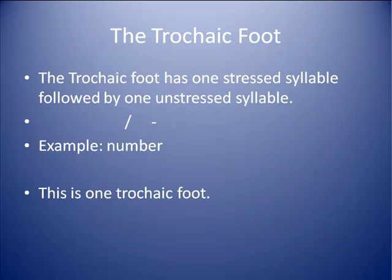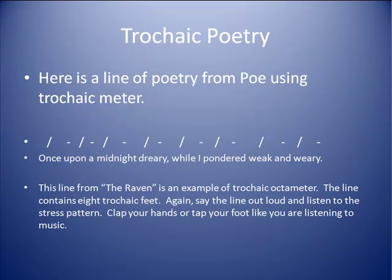Even though the iambic foot is by far the most common, we can find examples of other types of poetry. Here is an example of the trochaic foot: the trochaic foot has one stressed syllable followed by one unstressed syllable. The example word is 'number' — the first syllable is stressed, the second is unstressed. Here is a line from Poe using trochaic meter: 'Once upon a midnight dreary, while I pondered weak and weary.' This line from The Raven is an example of trochaic octameter — it contains eight trochaic feet, which is very long and quite unusual. Say the line out loud and listen to the stress pattern; clap your hands or tap your foot like you are listening to music.